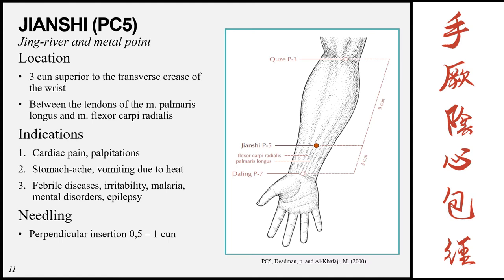The next point is Jian Shi, pericardium 5. This is the Jing-river and metal point of the meridian, located 3 cun superior to the transverse crease of the wrist — compared to pericardium 4 which is at 5 cun. It is also between the tendons of the palmaris longus and the flexor carpi radialis. Indications include cardiac pain and palpitations; stomach ache and vomiting due to heat; and febrile diseases, irritability, malaria, mental disorders, and epilepsy. Insertion is perpendicular, 0.5 to 1 cun.